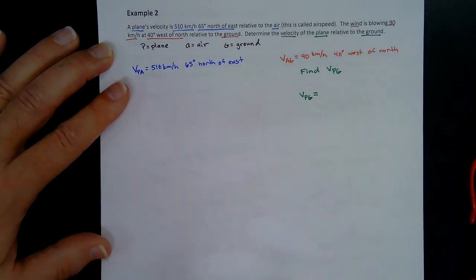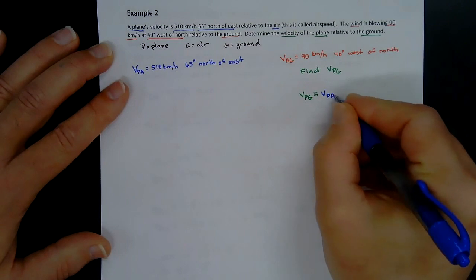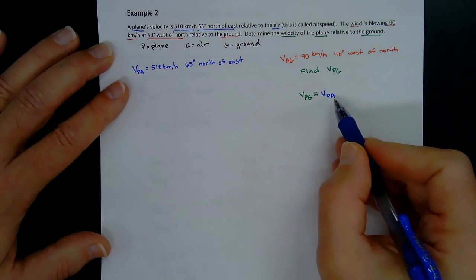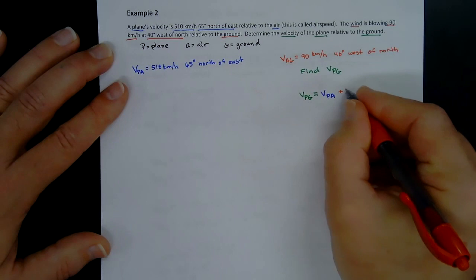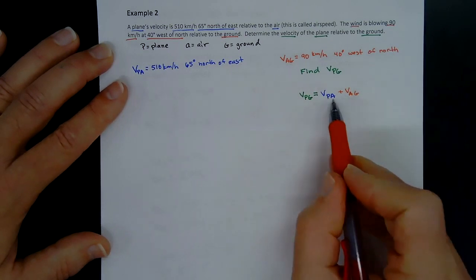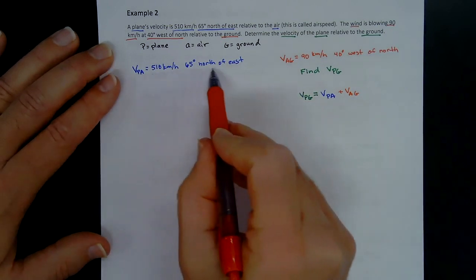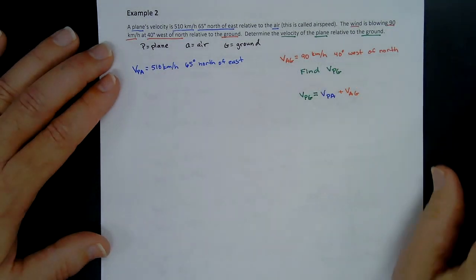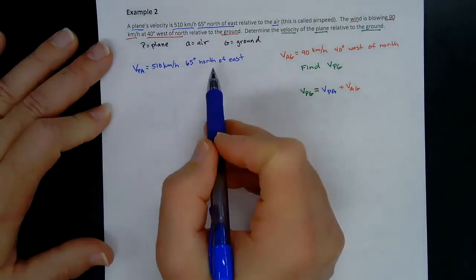V sub PG equals V sub PA plus V sub AG — this works in two dimensions just as in one dimension. To add these vectors, we need to find the horizontal and vertical components of each. The problem is that the directions are given verbally, not as angles, so we need to convert them to angle-of-rotation form first.